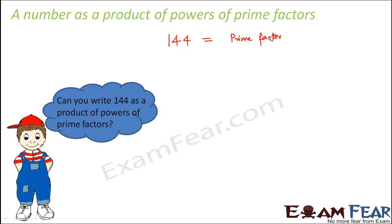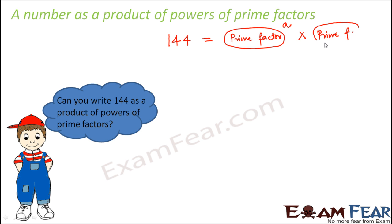In case you have forgotten it, please refer to the existing video on prime factorization. So how we have to represent it is: you have a prime factor to the power some number, again multiplied by some other prime factor to the power some number B.